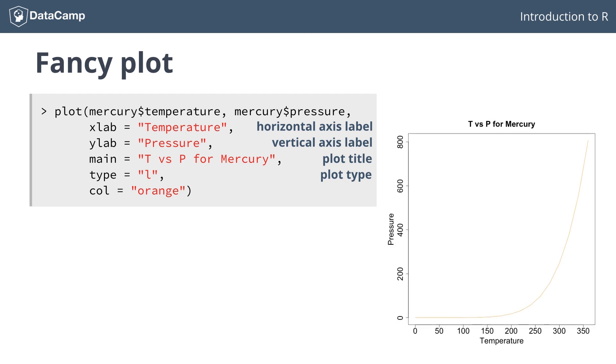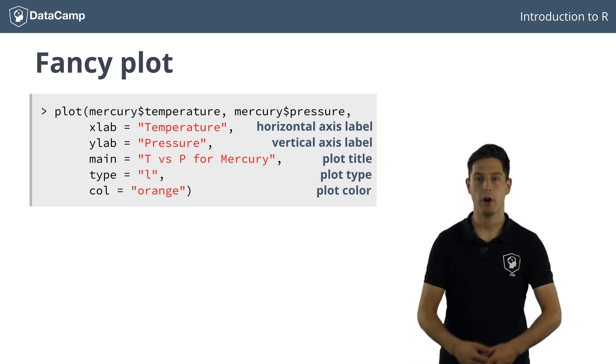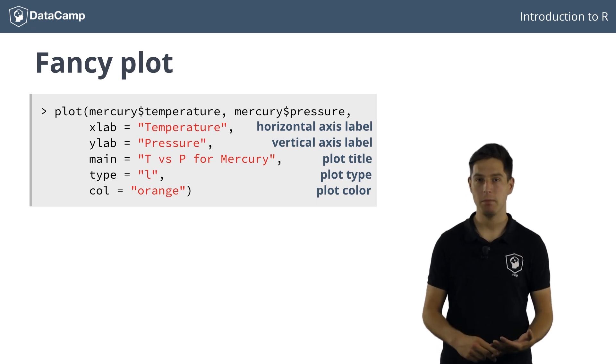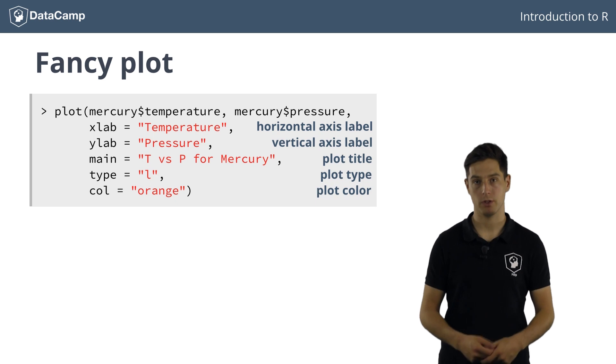Finally, the col argument specifies the plot color. Most of the arguments that are used here, such as xlab, ylab, main and type, are specified in the documentation of the plot function.